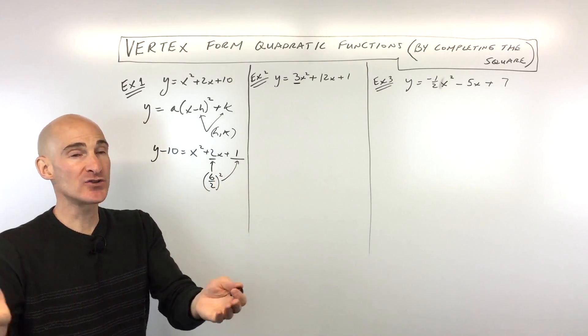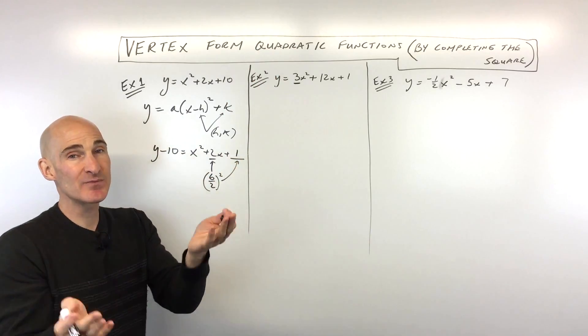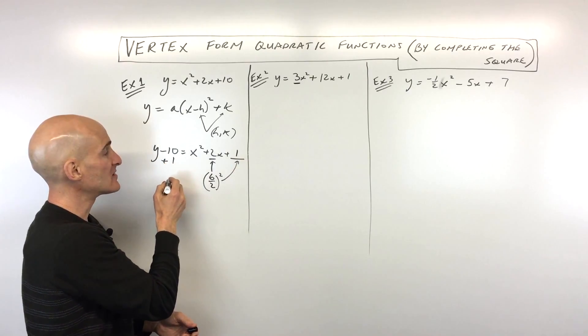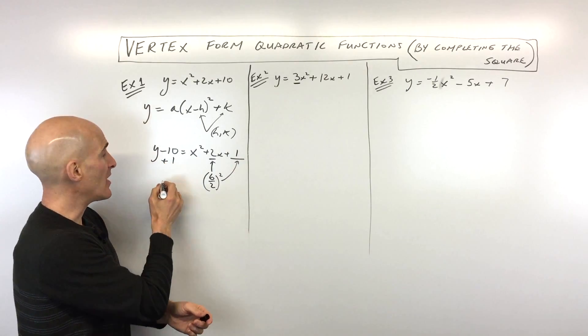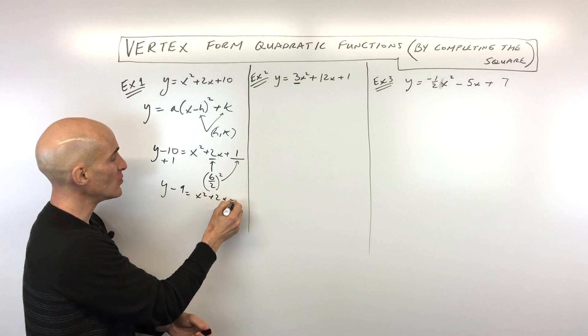Now, the thing is, this is an equation, right? Out of thin air, I just put 1 on the right side of this equal sign. So to keep this balanced, if I add 1 here, I have to add 1 to the other side as well, to keep it balanced. So we have y minus 9 equals x squared plus 2x plus 1.